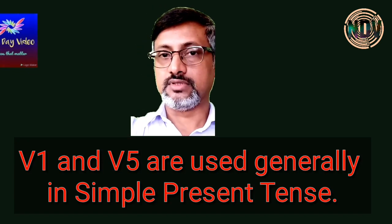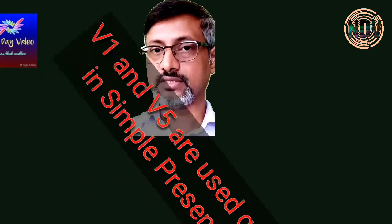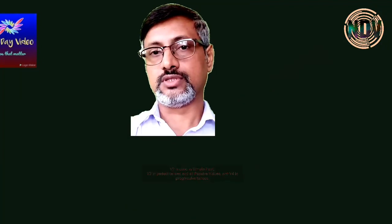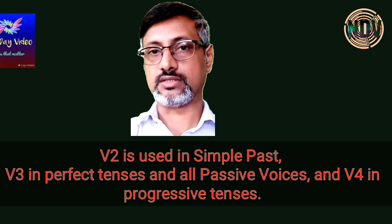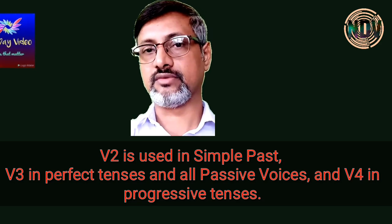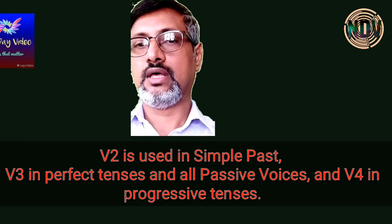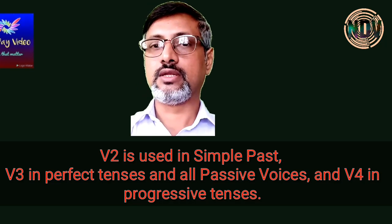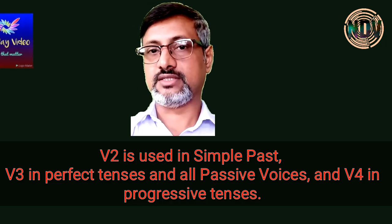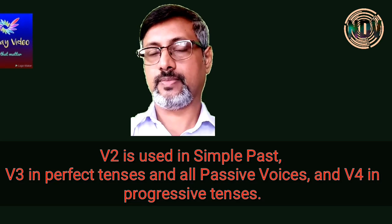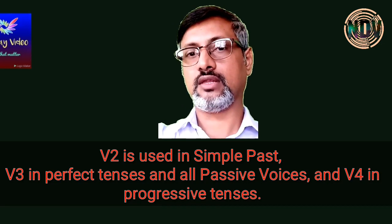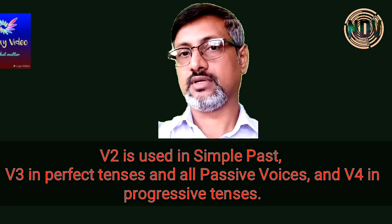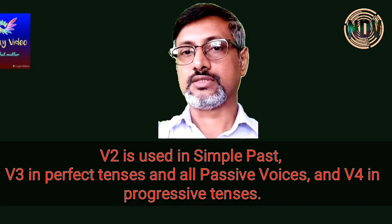V1 and V5 are used in the present tense. V2 is used in the simple past — I have discussed that in a previous video lesson, the link is given in the description. V3 is used in perfect tenses and passive voice. V4 is used in progressive tenses, and it has other uses as well. V5, as I told you, is used in simple present tense along with V1.